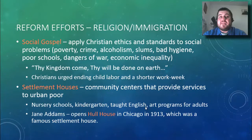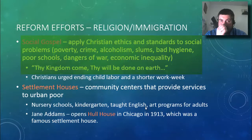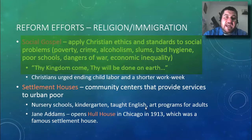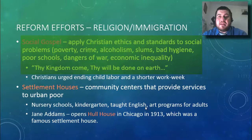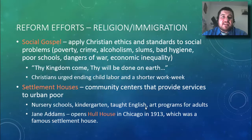The Social Gospel movement is a Christian movement that applies Christian ethics and standards to social problems such as poverty, crime, alcoholism, slum housing, bad hygiene, poor schools, the dangers of war, and economic inequality. It comes from the Lord's Prayer — 'thy kingdom come, thy will be done on earth as it is in heaven.' Two things Christians urged during this time were ending child labor and gaining a shorter work week for workers.